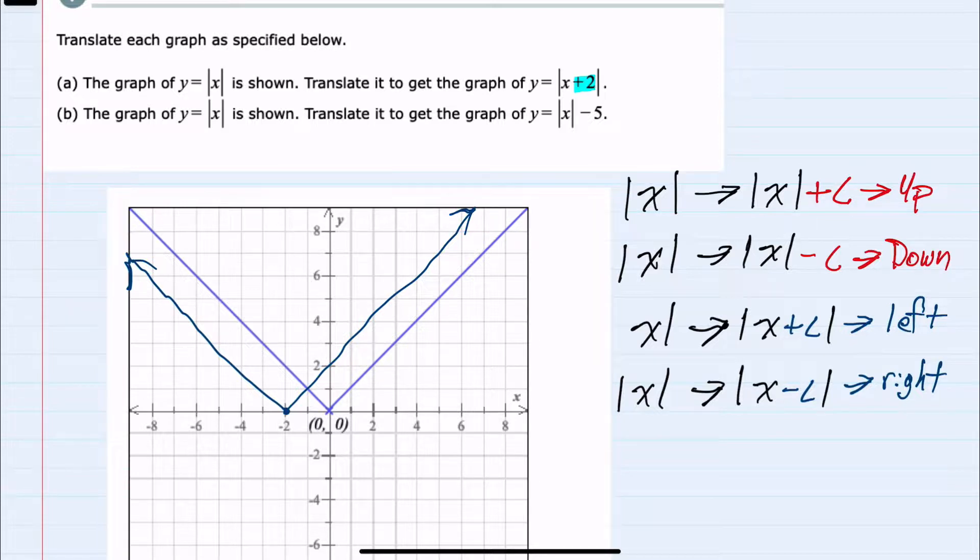And then for graph B, we have the absolute value of x minus five. But here, the minus five is outside of the absolute value. So this would be a translation down five units.